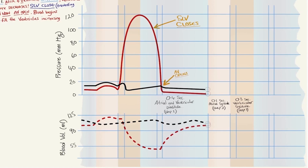On the blood volume graph, as pressure decreases, blood volume also decreases until the AV valves open, whereby passive filling causes both atria and ventricles to fill slightly with blood.